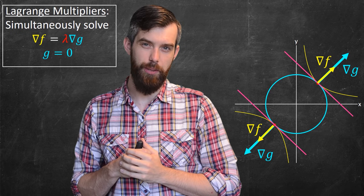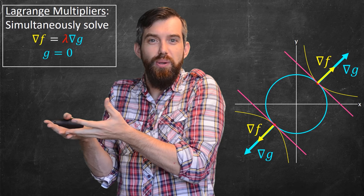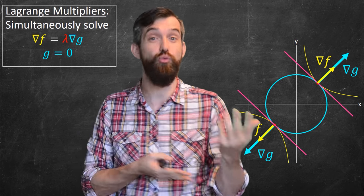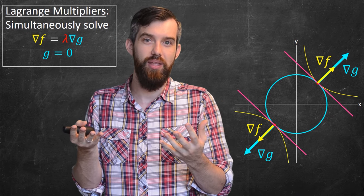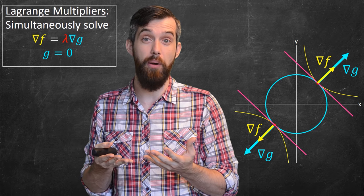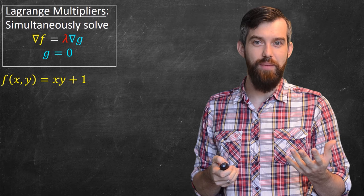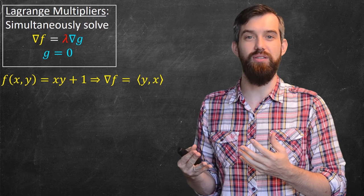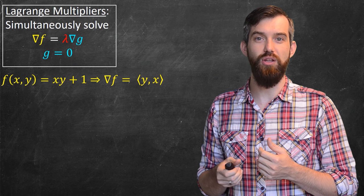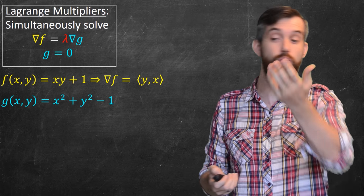There are two relevant equations. The first is the relationship between the two gradient vectors: ∇f = λ∇g, where lambda is just some constant saying these two vectors are scalar multiples of each other. The second equation is the original constraint, g = 0. So to find the maximum, I need both conditions: the gradients being scalar multiples, and the original constraint. Now, computing the gradients: for f(x,y) = xy + 1, ∇f = (y, x). For the constraint g = x² + y² - 1, ∇g = (2x, 2y).